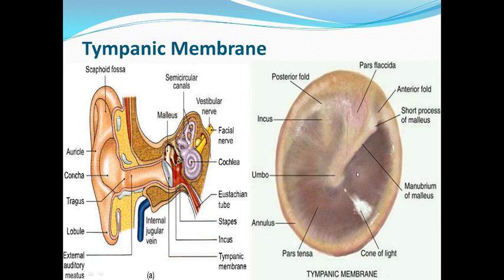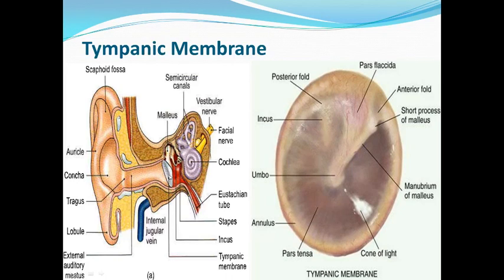This tympanic membrane has two surfaces. The outer surface is lined by skin and is concave in shape. The inner surface is convex and provides attachment to the handle of the malleus. The handle — the manubrium of the malleus — is attached to the inner surface of this tympanic membrane. The point of maximum convexity, located at the tip of this handle, is called the umbo.